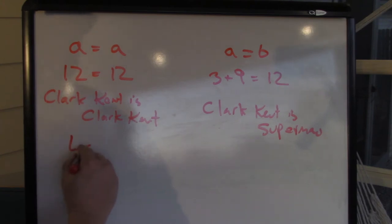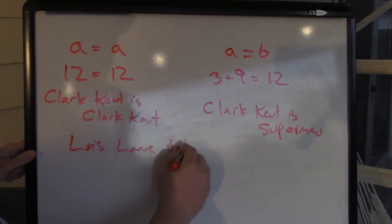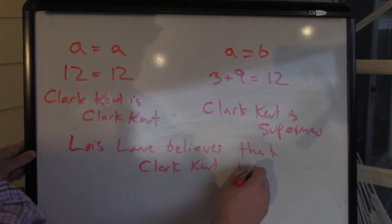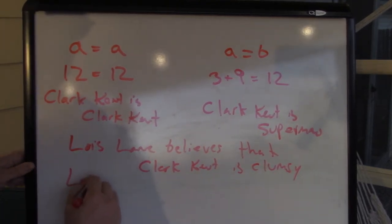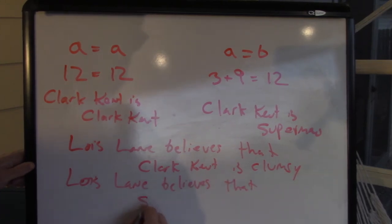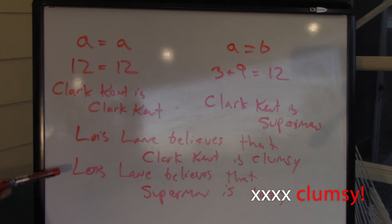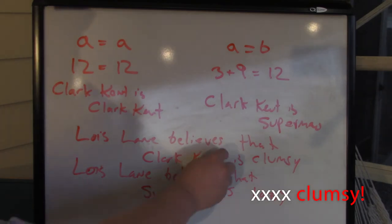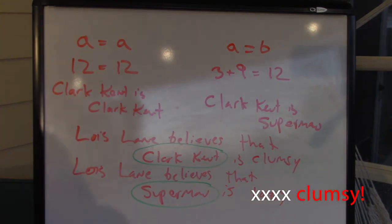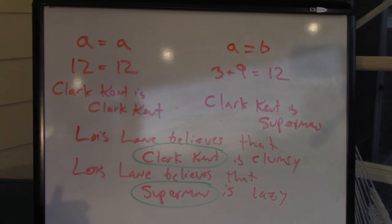Similarly, you might imagine a statement like Lois Lane believes that Clark Kent is clumsy might be true. But Lois Lane believes that Superman is lazy. That seems to be false, right? Given what we know about Lois Lane, before she knows that Clark Kent is Superman, she's going to have different beliefs about him. But how is it that this statement can be true and this statement can be false when a part of the statement, these denote the same thing. These refer to the same person. So how can the meaning of these two statements differ? This is the puzzle that motivates a significant insight of Frege's philosophy of language.